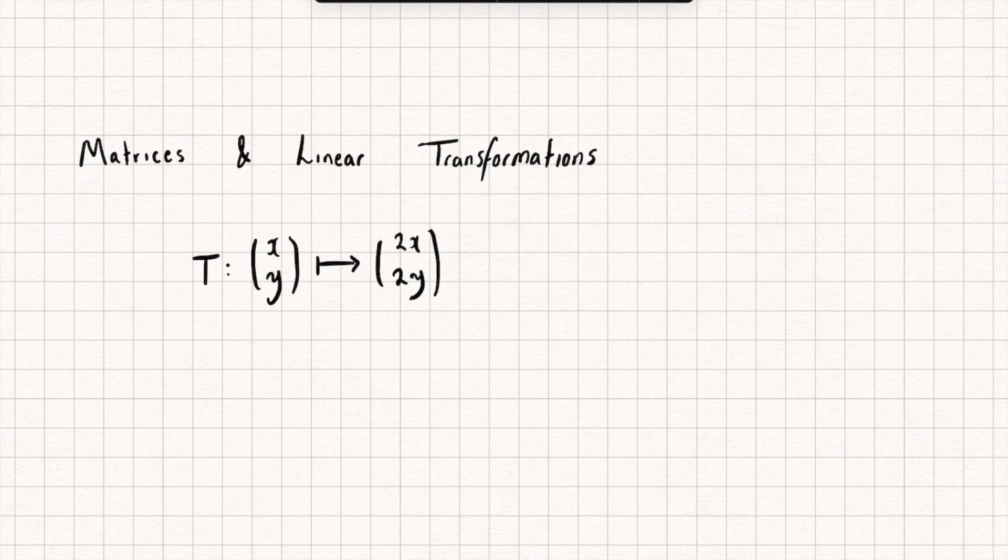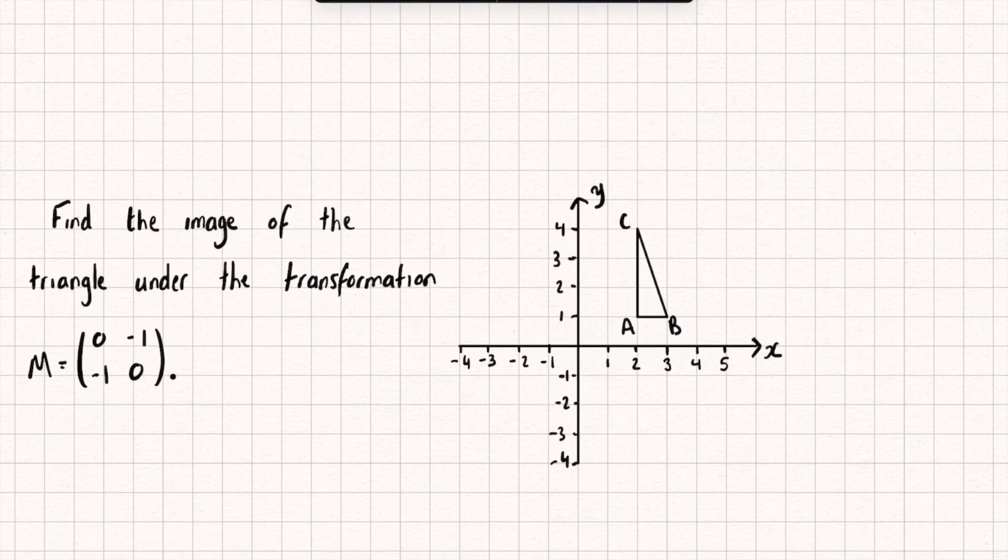It turns out that all of these linear transformations can actually be represented as matrices. We're going to look at how we can find these and the different types of matrix transformations we need to know a bit later on.